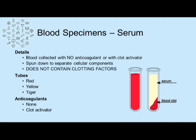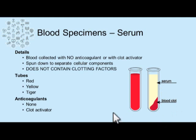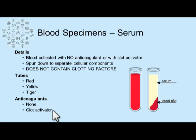Serum, on the other hand, does not contain any anticoagulant and often has a clot activator present. The sample is allowed to clot, then spun down. The clot and cellular components go to the bottom of the tube, and the liquid portion of a serum sample does not contain clotting factors. Acceptable serum-yielding tubes include red top tubes, yellow top tubes, and tiger top tubes.